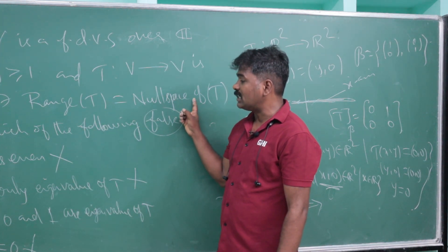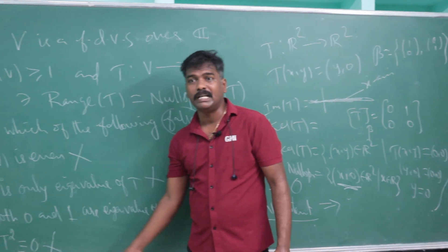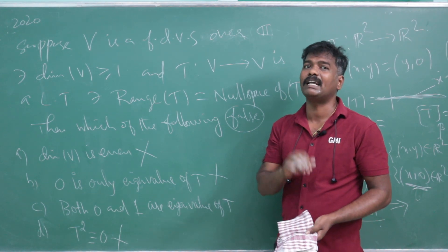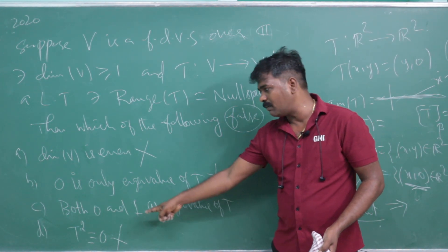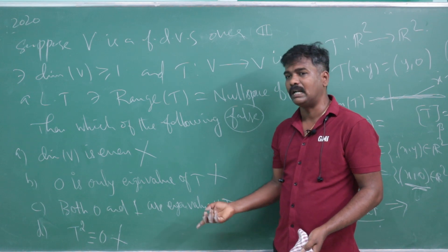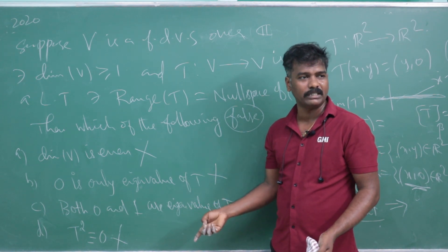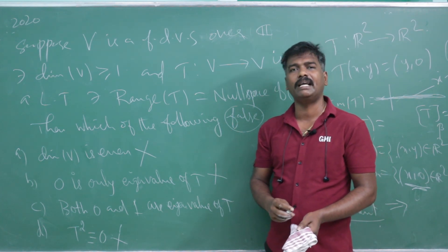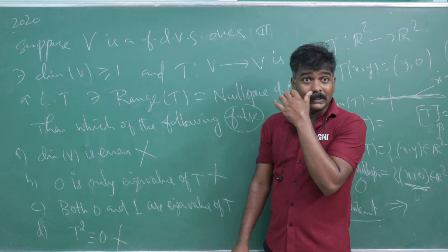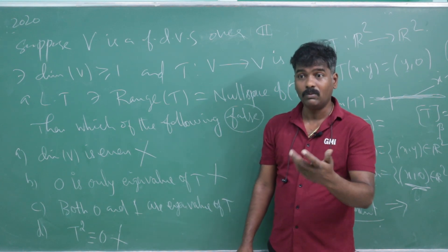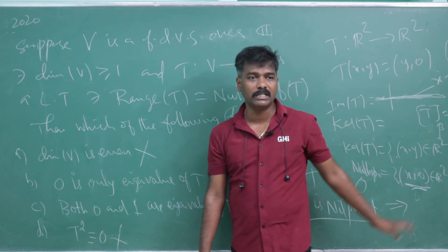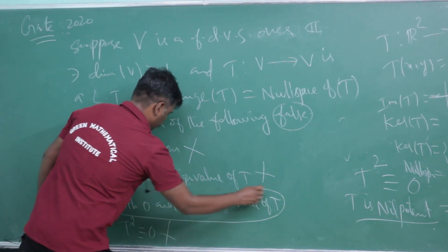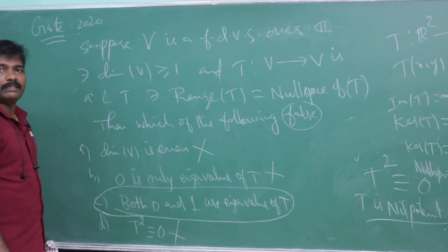So range of T equals null space of T implies T² = 0, T is nilpotent, and 0 is the only eigenvalue of T. Therefore, the false statement is '0 and 1 are both eigenvalues of T'.